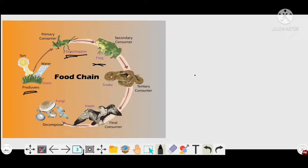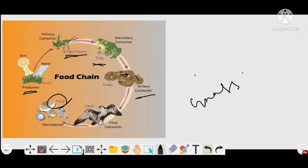The secondary consumer — the frog — is then eaten by the next secondary consumer, which may be a hog. Later on, the secondary consumer decomposes, and here the decomposer is fungus. This is the small example of a grassland food chain.